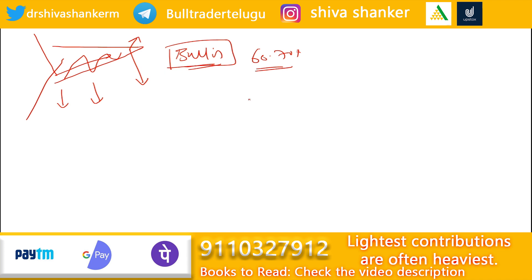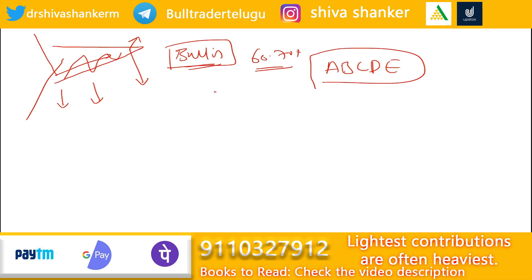In the corrective pattern, we have 5 waves — that is A, B, C, D, and E. In comparison, we have 3 waves in flats and zigzags — that is A, B, and C. But in the triangle, we have 5 waves.